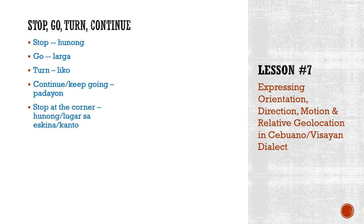Stop at the corner: stop is hunong, or in Cebu the more common term is lugar. The corner is iskina or kanto. So you can say hunong sa iskina or hunong sa kanto — that means stop at the corner. Or you can also say lugar sa iskina or lugar lang sa kanto — same thing.